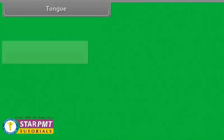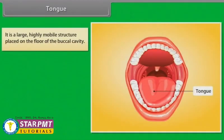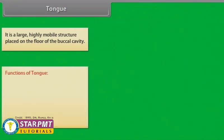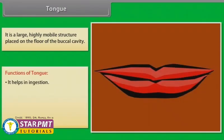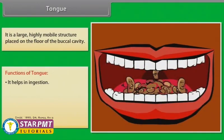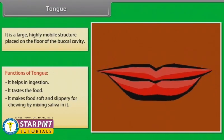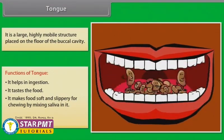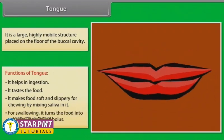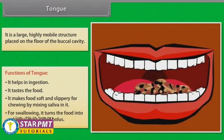The tongue is a large, highly mobile structure placed on the floor of the buccal cavity. It helps in digestion, tastes the food, and makes food soft and slippery for chewing by mixing saliva in it. For swallowing, it turns the food into a spherical mass called bolus.